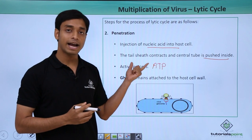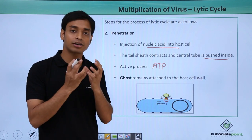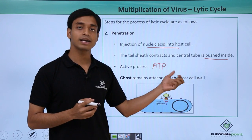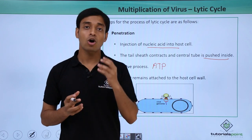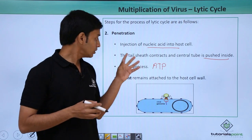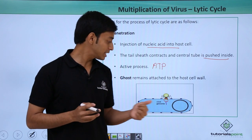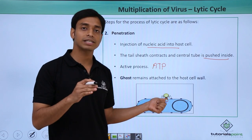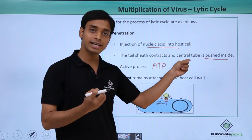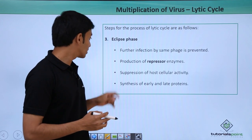This penetration is a very active process that uses ATP energy molecules. The ghost — the protein portion of the virus devoid of genetic material — remains attached to the cell wall and cannot enter; only the genetic material or nucleic acids can enter through the tail fiber. The tail fibers contain lysozymes or hydrolytic enzymes that create a hole in the host cell surface, through which the central tube is pushed inside and the nucleic acid passes into the host organism.